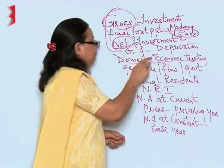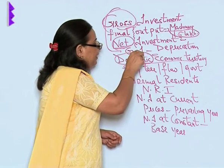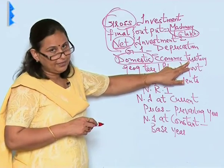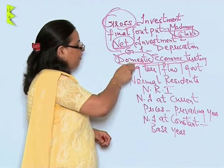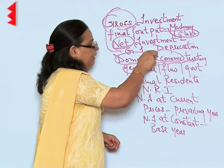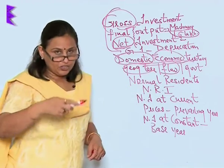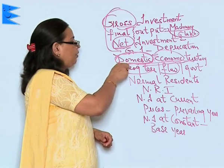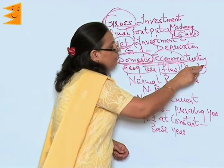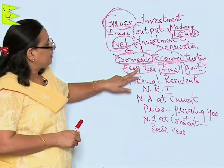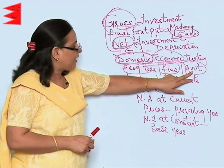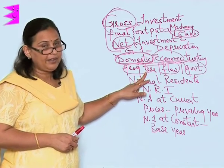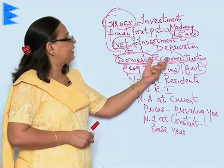Domestic means the country in itself. Economic means dealing with money. Territory means the land. So, a geographical territory in which economic activities are going on — that is, flow of production, consumption and expenditure — and which is free to make its own policies, meaning it has a responsible government. Since it fulfills these three aspects — a government, free flow of production, consumption and expenditure, and a geographical territory — it earns the term domestic economic territory.